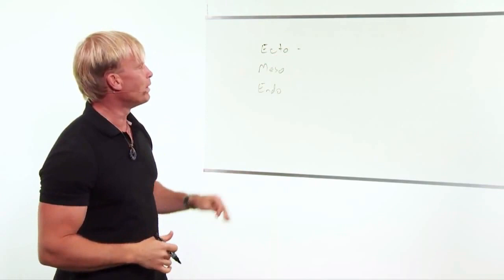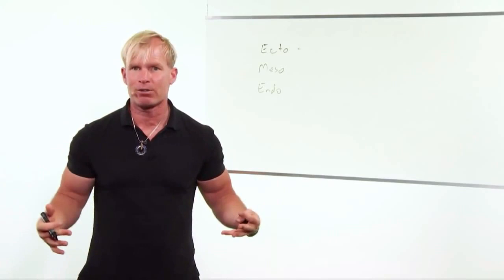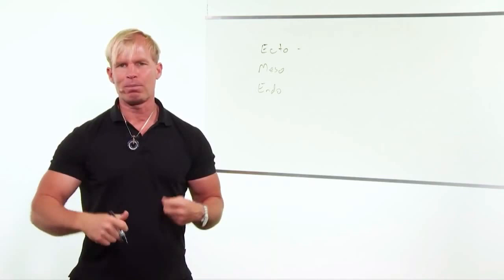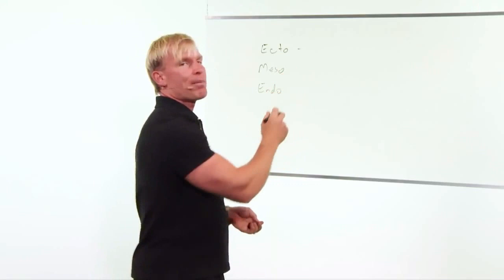The endomorph tends to have a very thick bone structure, wider hip structure, gains fat relatively easily. And then the mesomorph is kind of the naturally heavily muscled person, builds muscle easily, and also stays very lean. Most of the top bodybuilders or top athletes are particularly mesomorphs.